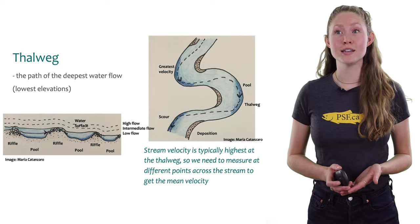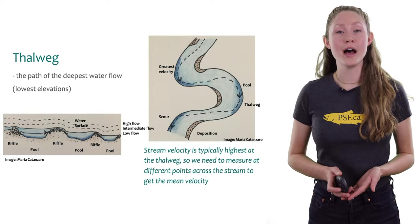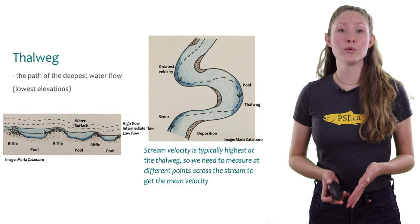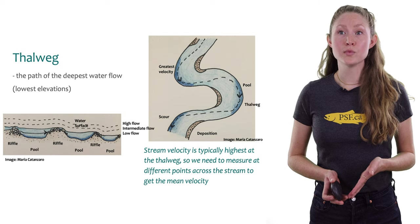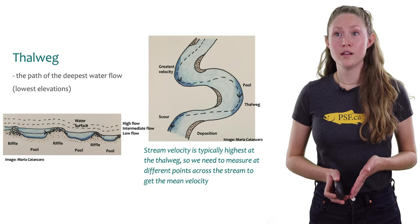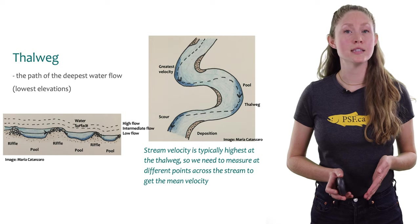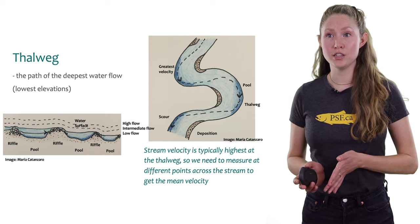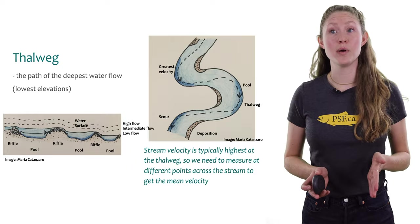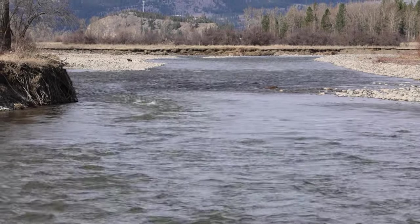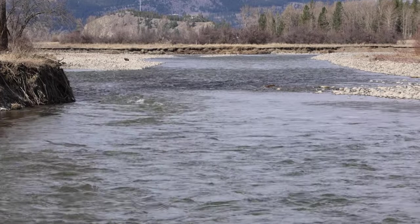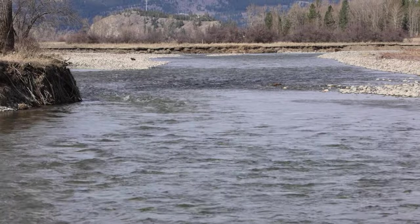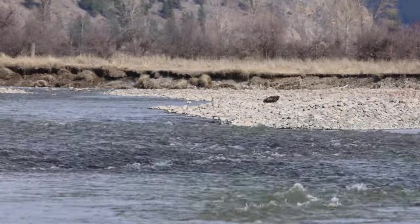The Thalweg is an imaginary line in a river that follows the path of the deepest water flow. This is also where the force of the water is strongest, so it is where erosion is happening. Like in a winding river, the Thalweg isn't in the center of the stream but tends to be towards the outside edge of a curve as it scours the bank. Since stream velocity is typically highest at the Thalweg, you need to measure at different points across the stream to get the average velocity.